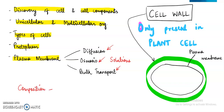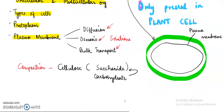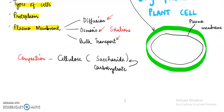Now what is the composition of cell wall — what material is it made up of? Cell wall is made up of cellulose. Cellulose is a type of polysaccharide, it is a type of carbohydrate. You are more familiar with the term carbohydrate — saccharides are nothing new; you will study in senior classes that carbohydrates are also known as saccharides.